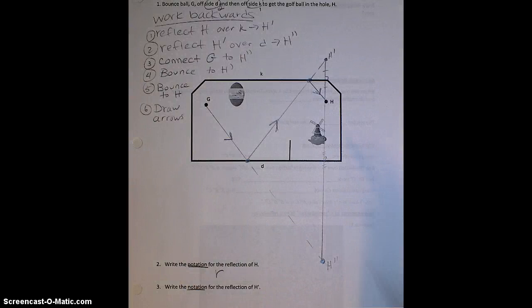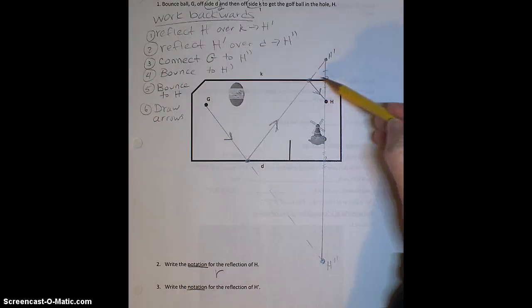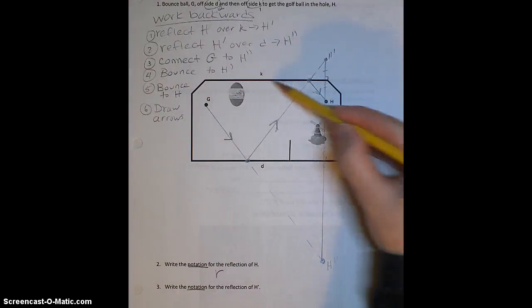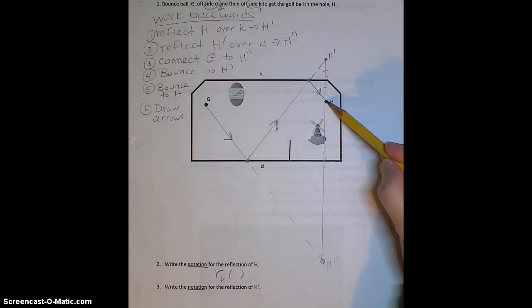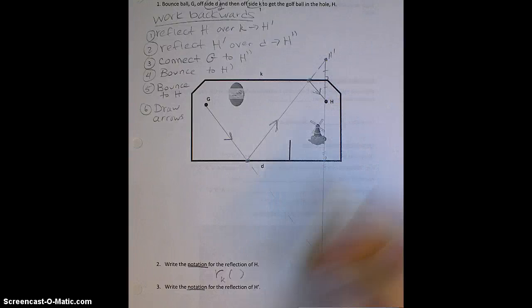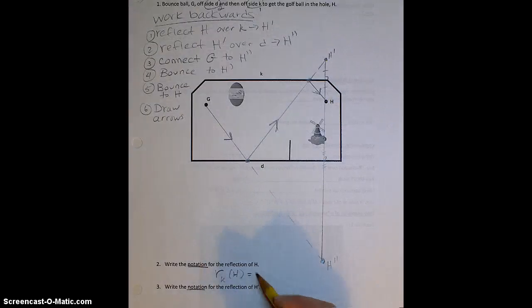And then which line did we reflect over first? Well, we reflected over this wall K, so I put a little K. Which point did I reflect first? That was point H. And then after that reflection, I ended up with H prime.